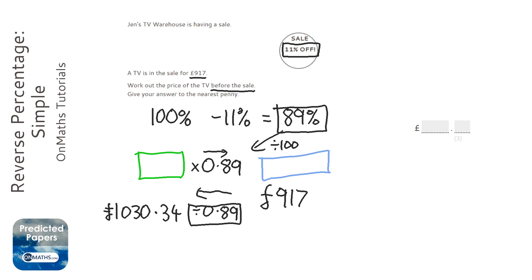1030. And we get £1030.34. So I've rounded that to nearest penny because the next one along it's 337. So the 7 pushes that 3 up to a 4. And so that's going to be £1030.34.